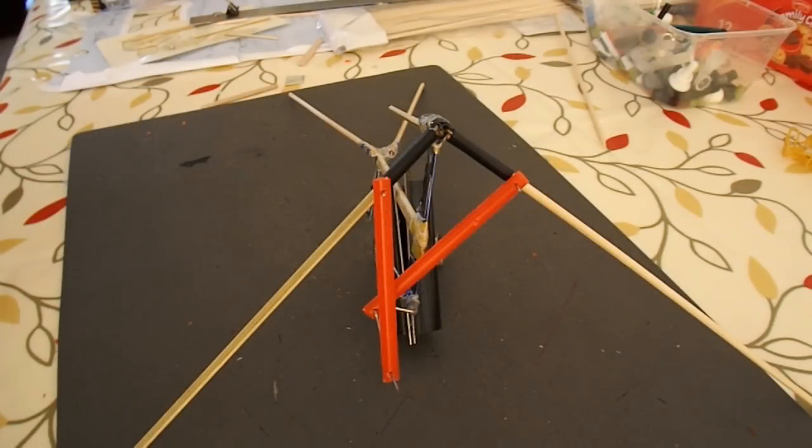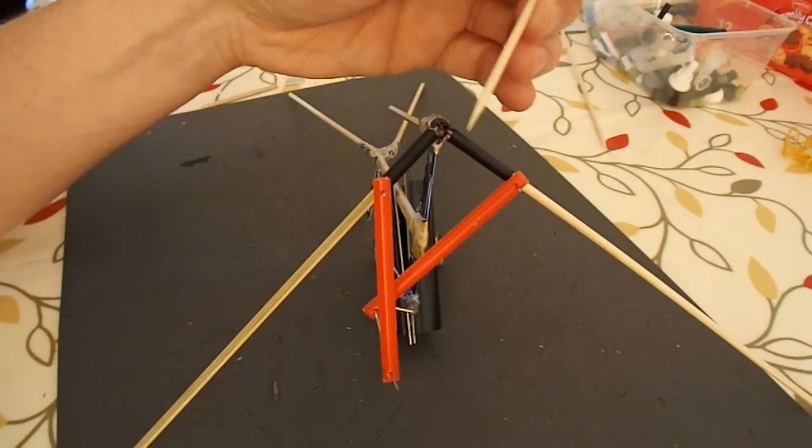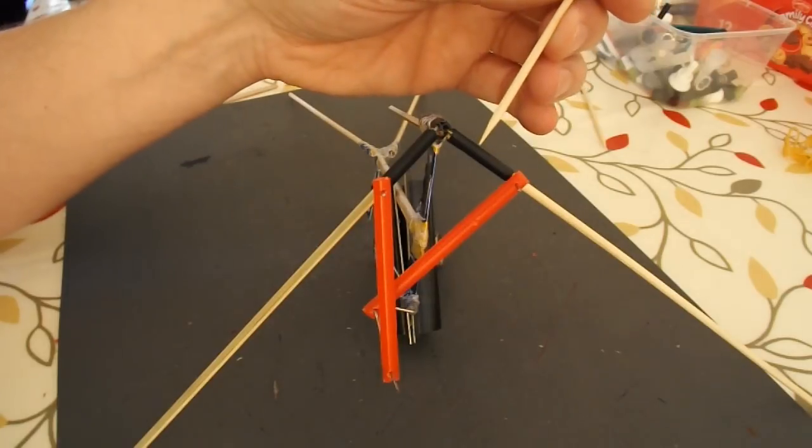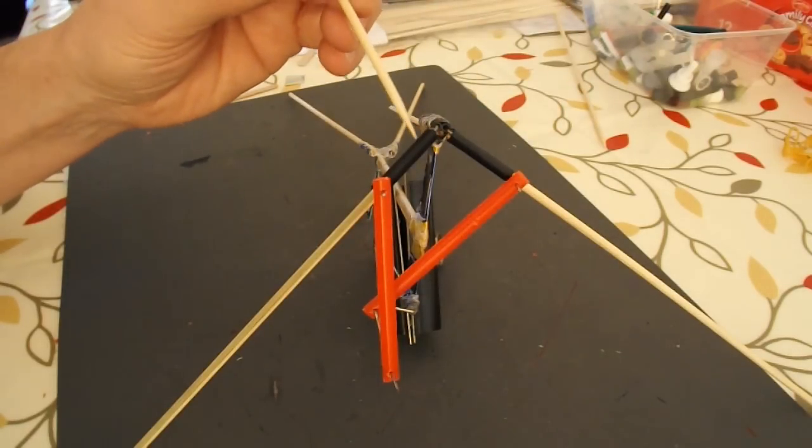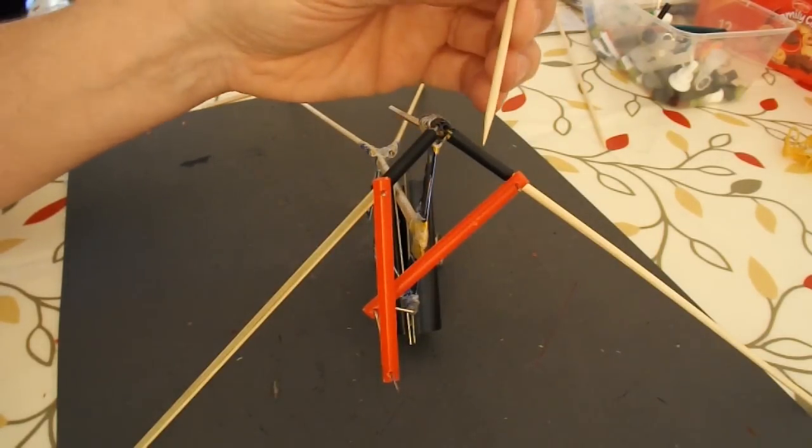The problem with it is when it dries it's very rigid and it cracks rather than flexes. So what I've done this time is on the joints on the wing here, instead of using the glue I've used heat shrink tubing. I've used double layer of it.